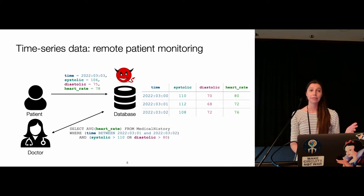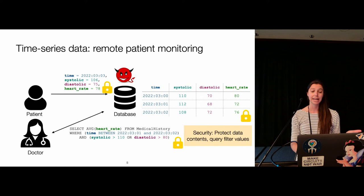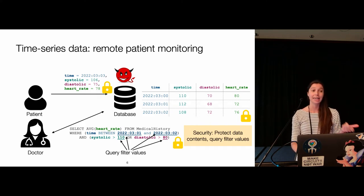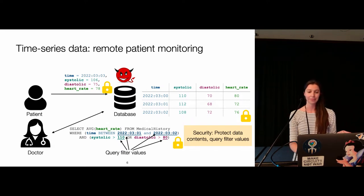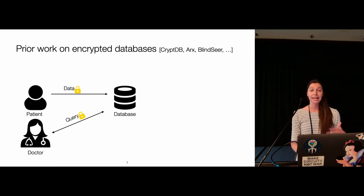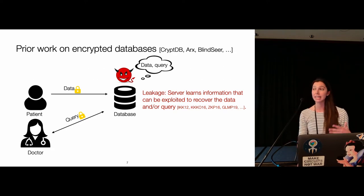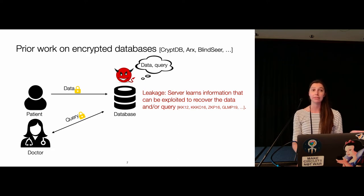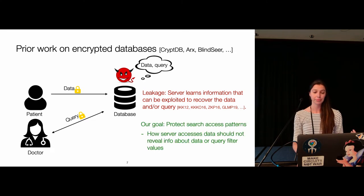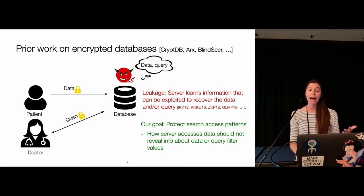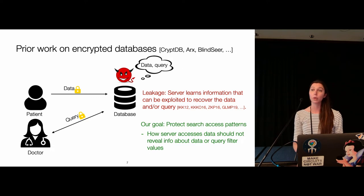We're worried about an attacker compromising the database, so we'd like to protect the data contents as well as the query filter values — meaning the values in these predicates, like the time interval, the 110 in systolic greater than 110, and the 80 in diastolic greater than 80. Prior work on encrypted databases allows queries over encrypted data, but all these solutions have leakage. The server learns information that can be exploited to recover the data or the query. Our goal is to protect these search access patterns so that how the server accesses data does not reveal information about the data or query filter values.